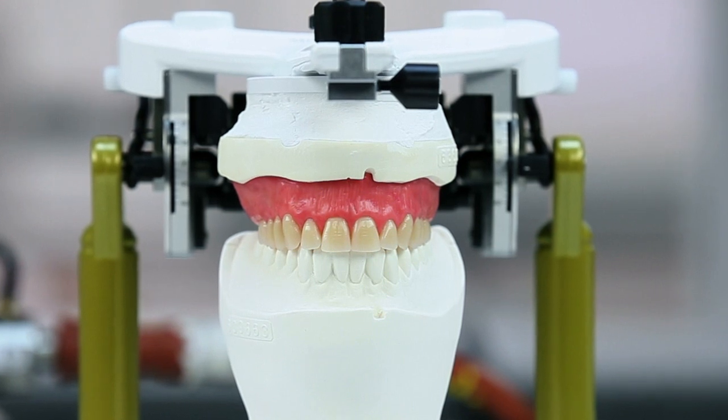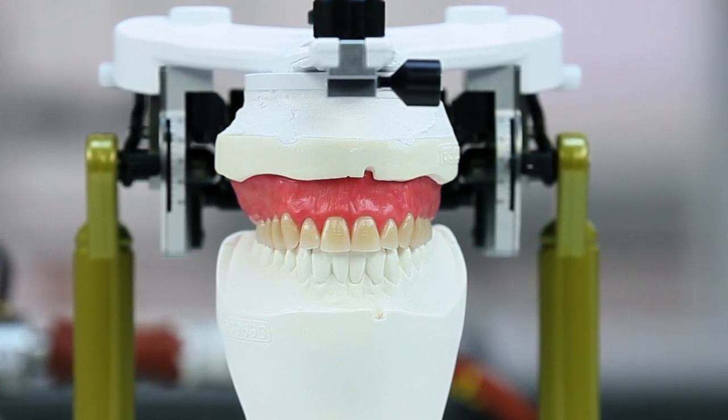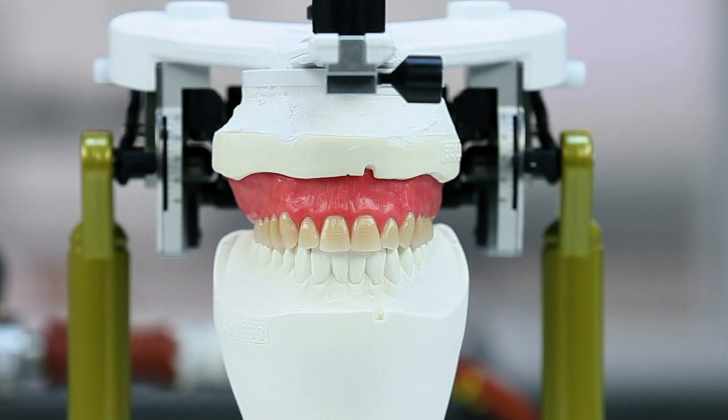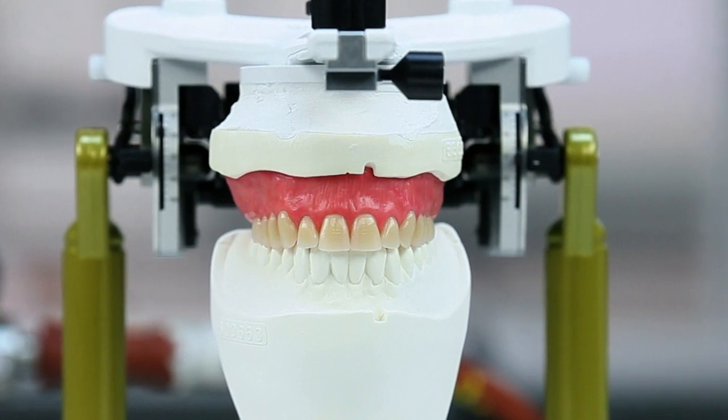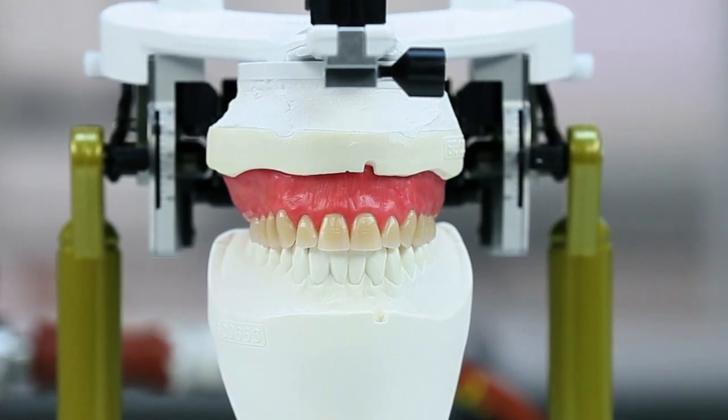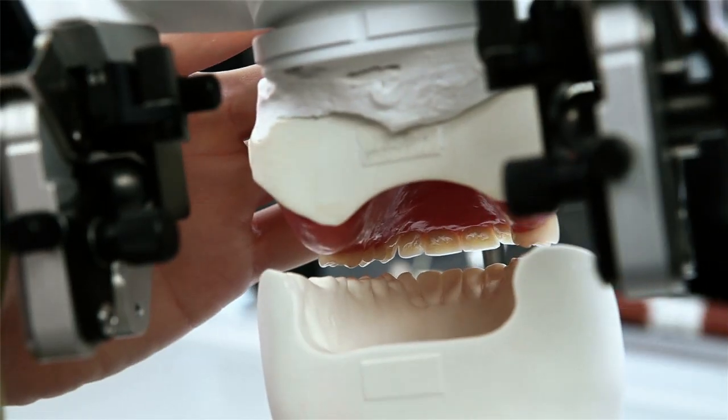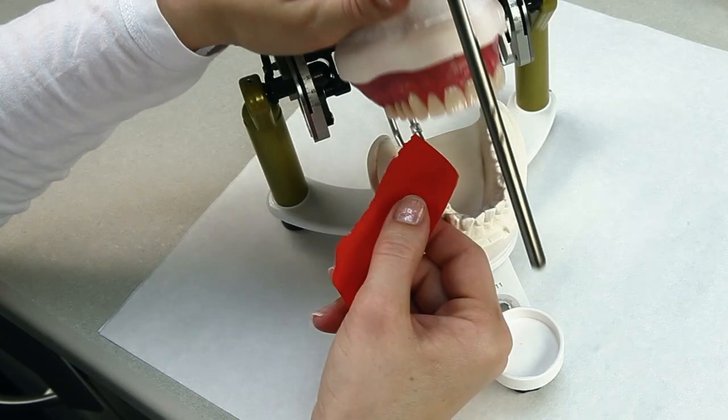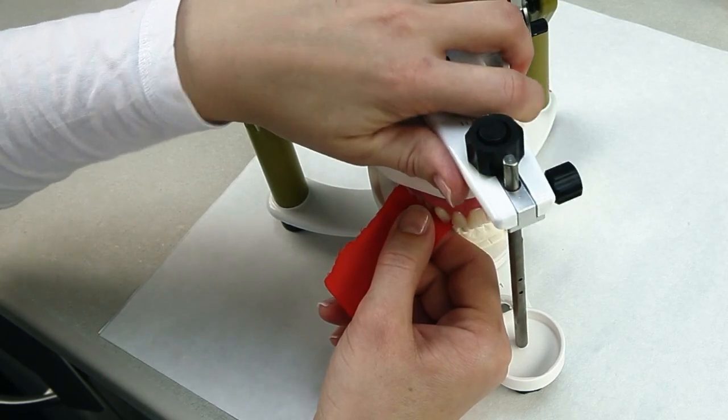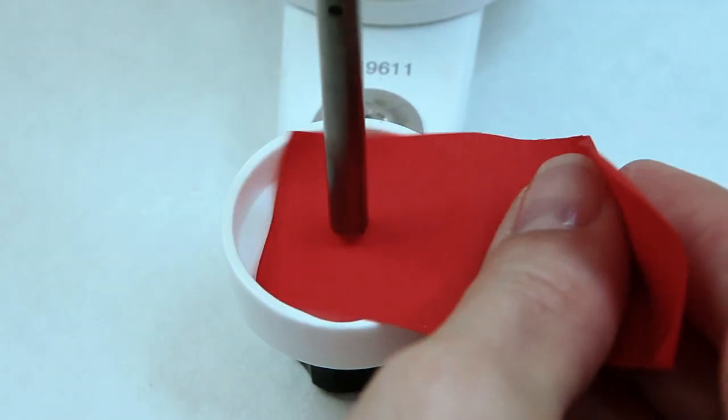The anatomic contouring should correspond with the future completed dentures to as large an extent as possible. This will help you save time during subsequent finishing. Check the wax-up in the articulator after try-in. The contact points in the occlusion should already be established at this point.